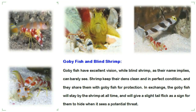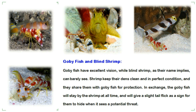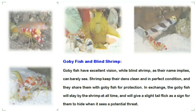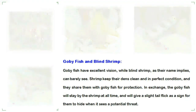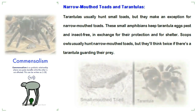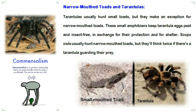Goby fish have excellent vision, while blind shrimp, as their name implies, can barely see. Shrimp keep their dens clean and in perfect condition, sharing them with goby fish for protection. In exchange, the goby fish stays by the shrimp at all times and gives a slight tail flick as a signal for them to hide when it spots a potential threat.